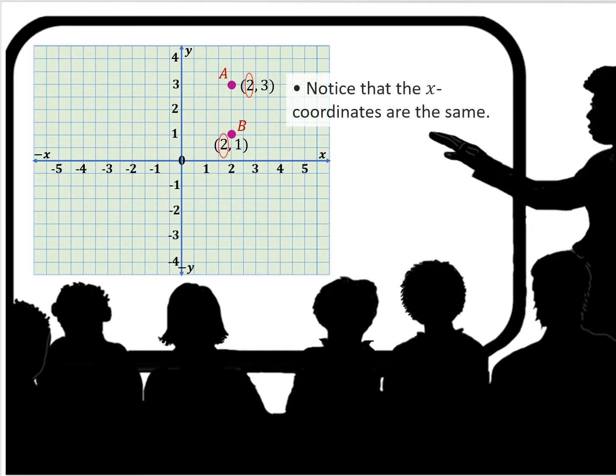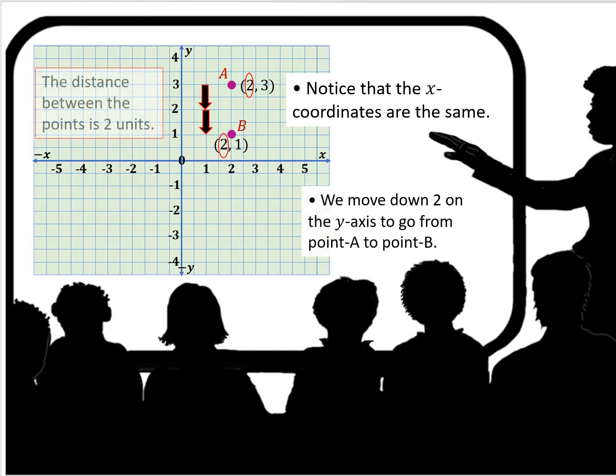You'll notice that the x-coordinates are the same. They both are two. Well, if we move down two on the y-axis to go from point A to point B, we would then say the distance between the two points is two units. It's two units down on the y-axis.